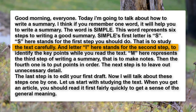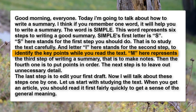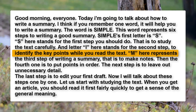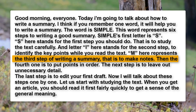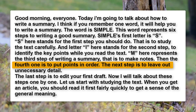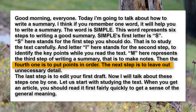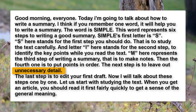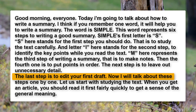Letter I here stands for the second step: to identify the key points while you read the text. M represents the third step of writing a summary, that is, to make notes. Then the fourth one is to put points in order. The next step is to leave out unnecessary detail. The last step is to edit your first draft. Now I will talk about these steps one by one.